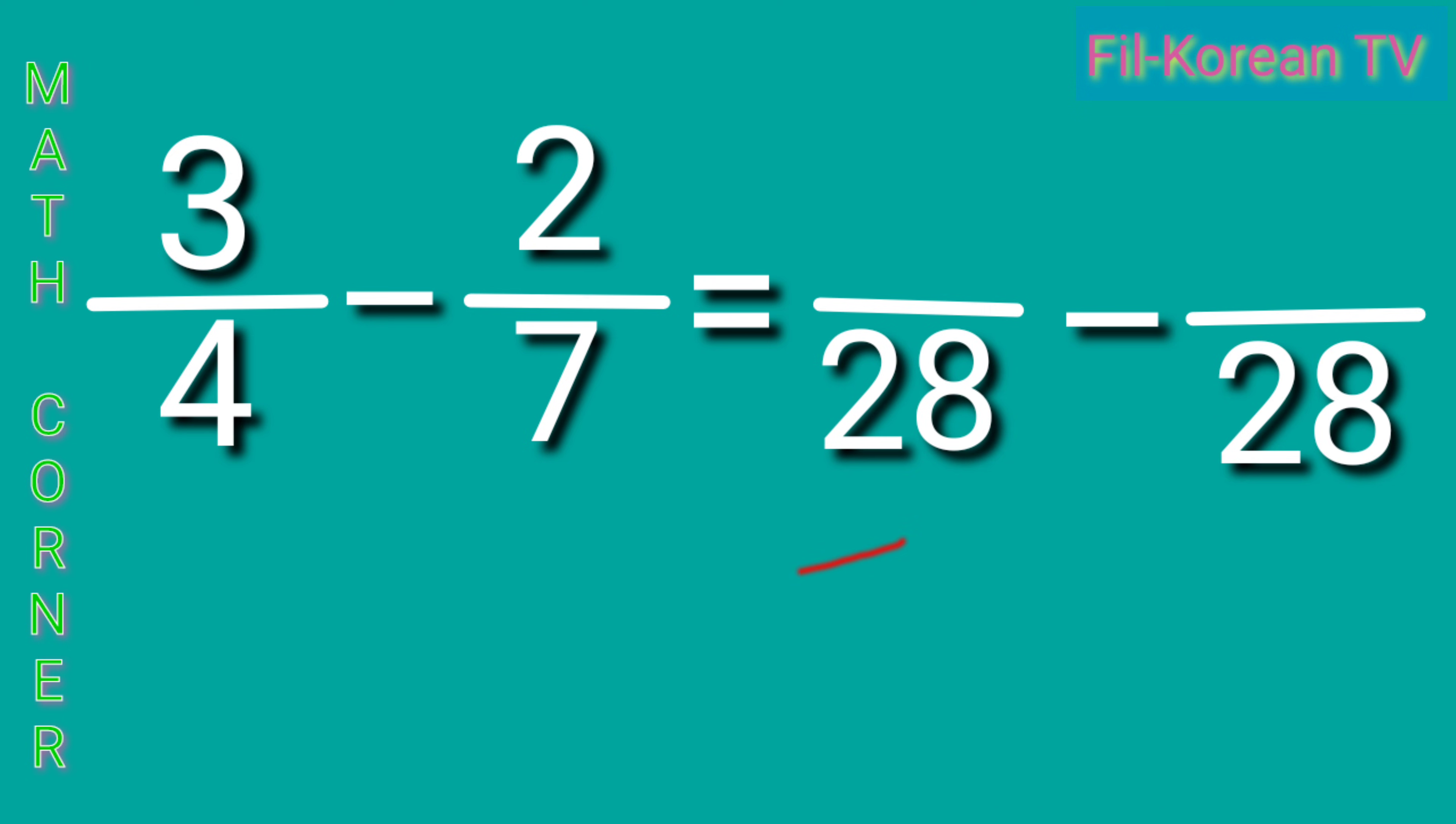Then divide. 28 divided by 4 equals 7 times 3 equals 21. The other one, 28 divided by 7 equals 4. 4 times 2 equals 8.